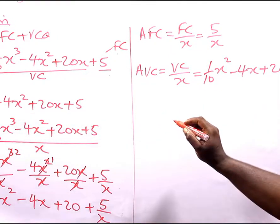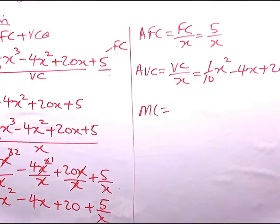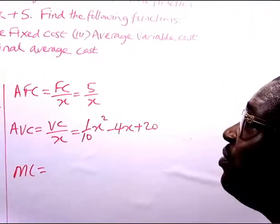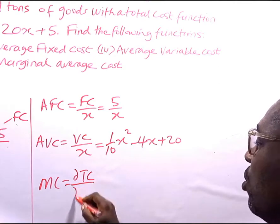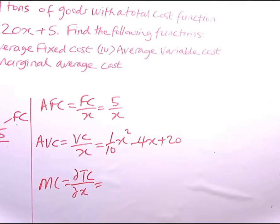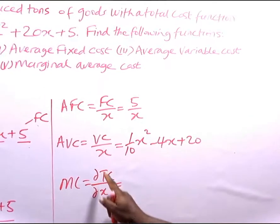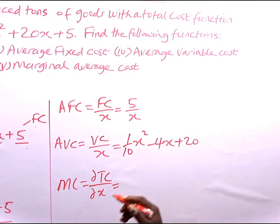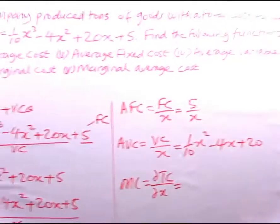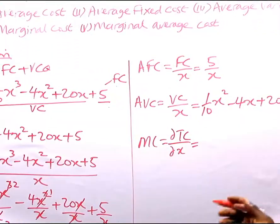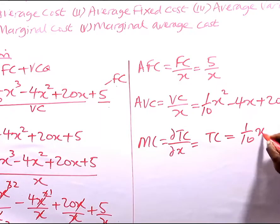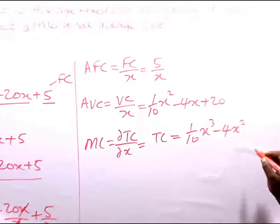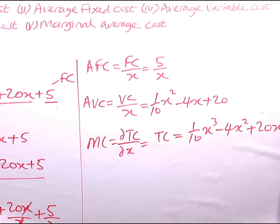Now we are asked to find the marginal cost. The marginal cost is actually the derivative of the total cost function — that is, the change in total cost over X, denoted dTC/dX. So the marginal cost is dTC/dX. The total cost function is (1/10)X³ - 4X² + 20X + 5.